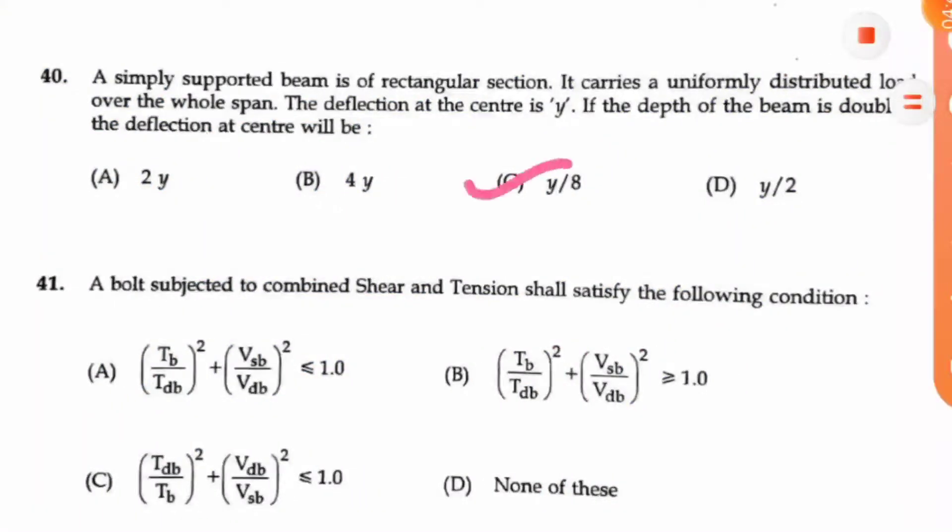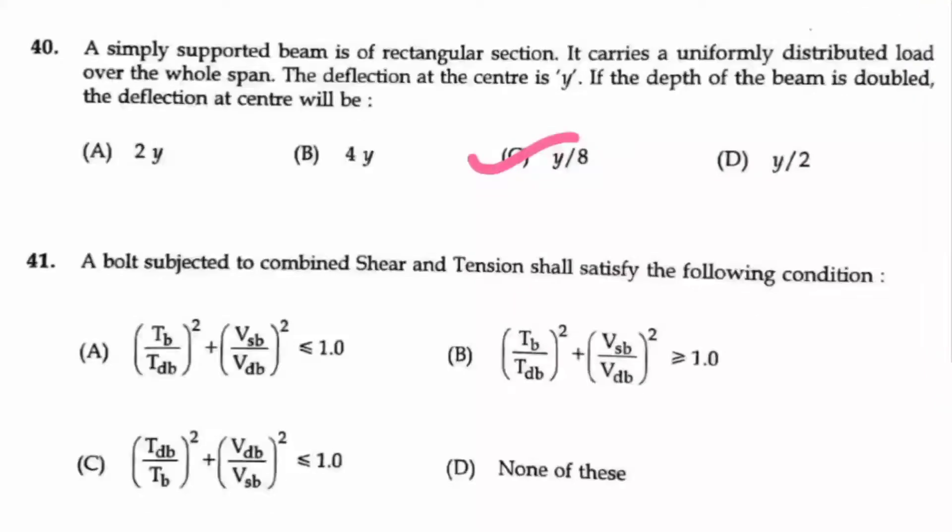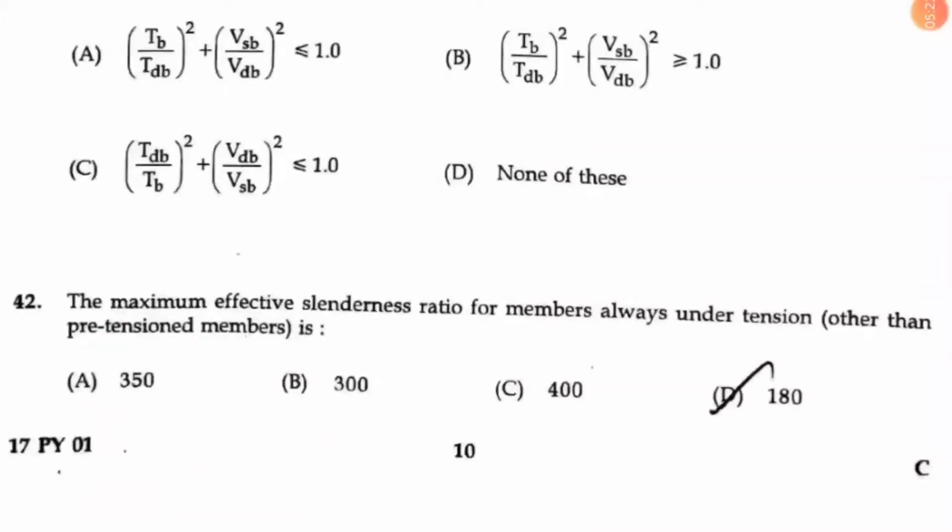Option C is the right answer. Next question 41: A bolt subjected to combined shear and tension shall satisfy the following condition. Option A is the right answer.